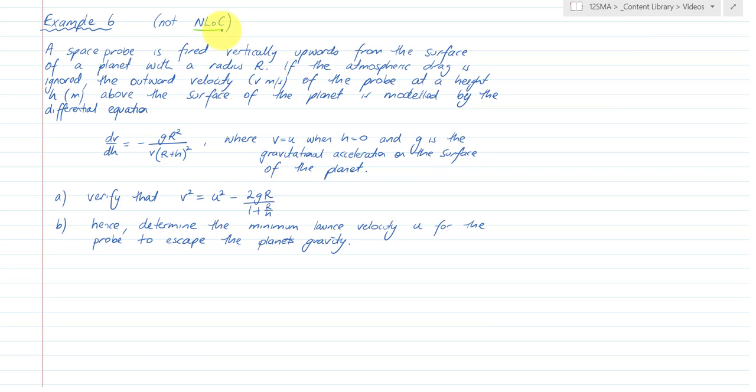So we don't need to use negative 9.8 or 9.8 in this case. We don't quite get that far. It's all very algebraic and theoretical. But that would be what it was if it was Earth. But in this case we're not told it's Earth. It's just surface of a planet.